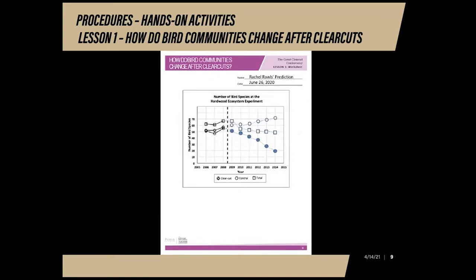This is the graph of my predictions. Your students will graph their predictions, and they will probably vary from student to student. I predicted that bird communities in the control regions will increase over time and that bird populations in the clear cut regions will probably decrease over time. I assumed they will decrease because birds usually make their nests in trees, and without trees I'm not sure they will make a home. Over time, I expect this to decrease the overall bird community population in this region.